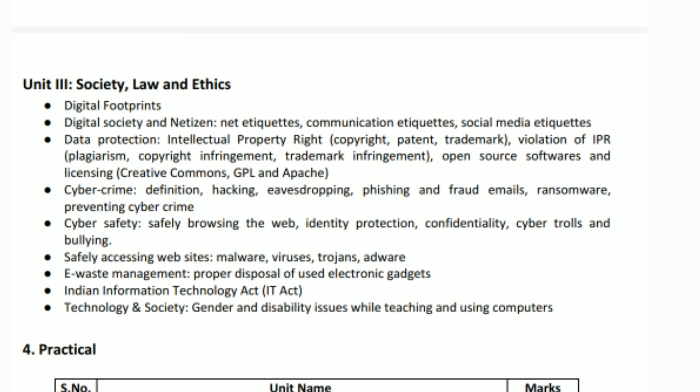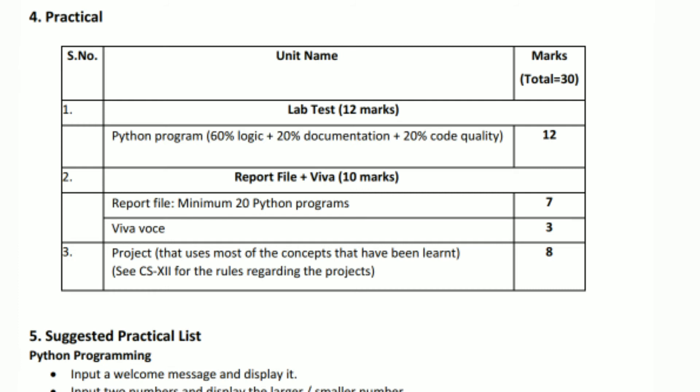And then moving forward, we will be having point number 4, that is about practical session. When we talk about point number 1, that is lab test, which will contain 12 marks. Here you have to do programs in the lab itself at the end of the session, and your lab activity will contain 60% of logic, 20% documentation—documentation means how the code is written—and 20% quality of your code. That means the complete lab activity will have 12 marks. Then moving forward, you have to submit a report file as well as a project file. Report file of maximum 20 Python programs, which will contain 7 marks. Then a project file—the project will be based on a complete concept you have learned in class 11th. You have to submit that project and it will contain 8 marks. Then finally your viva, that is of 3 marks. Complete is of 30 marks.